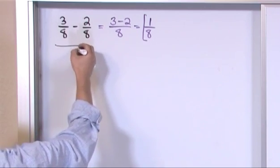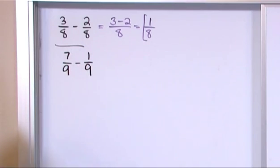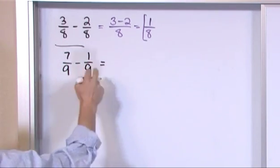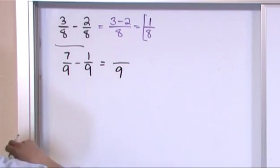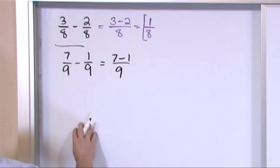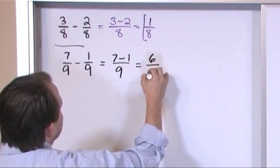So what if we had something like 7/9 minus 1/9? So I check to see if the denominator is the same and it is, so the denominator stays the same. In the numerator, because I'm subtracting, I'm going to have 7 minus 1. So 7 minus 1 is 6/9.